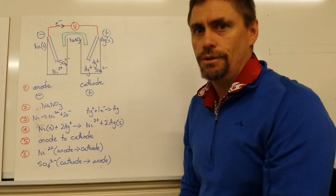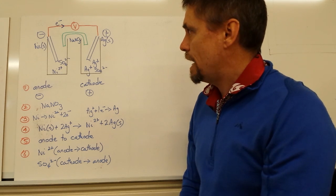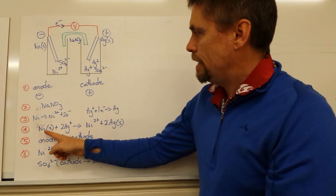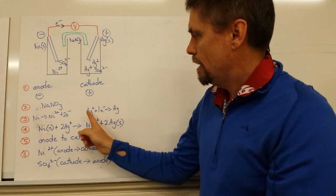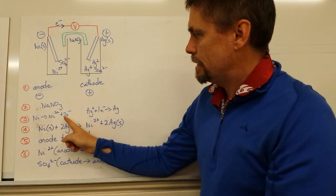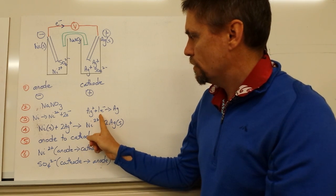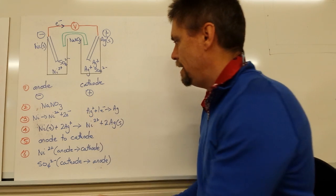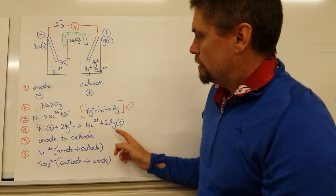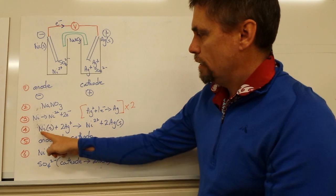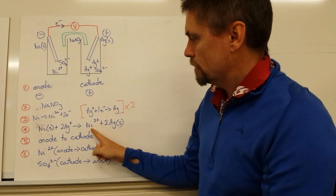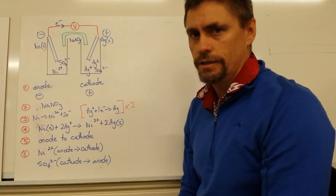Step four requires a fully balanced redox reaction for the completed electrochemical cell. We take the nickel half-reaction and the silver half-reaction and balance for the number of electrons. The nickel side gives two electrons; the silver side takes one electron, so we multiply the silver half-reaction through by two. Our completed redox reaction is: one nickel solid plus two silver ions gives one nickel 2+ plus two silver solid.